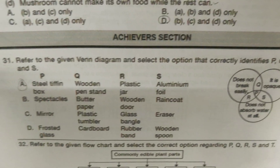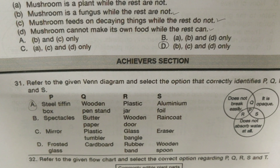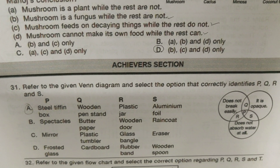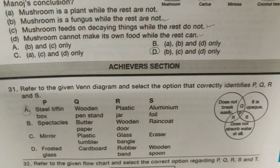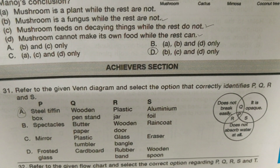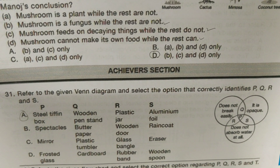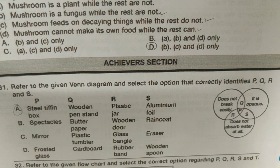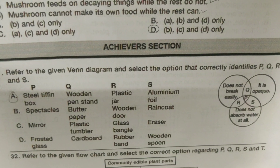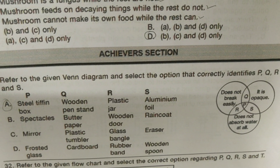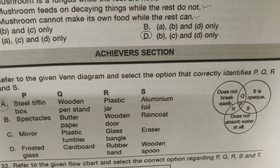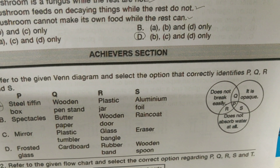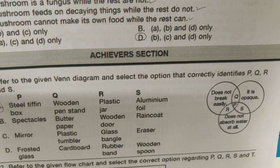Now let's achieve a section. Refer to the Venn diagram and select the option that correctly identifies P, Q, R, N, S. It's A — steel stiffened box, wooden paint stand, plastic jar, aluminum foil.